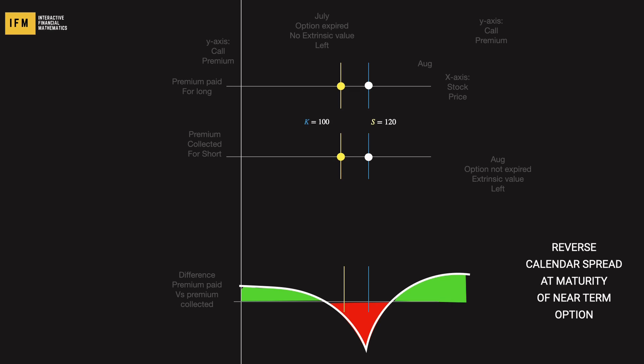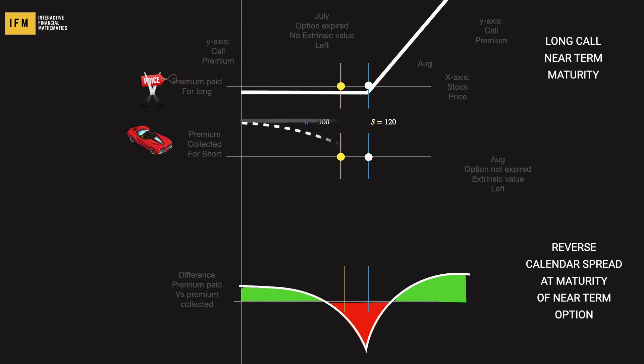This strategy involves buying a relatively cheap short-term option and selling a more expensive longer-term option. It's particularly useful when you anticipate not only a significant price movement in the underlying asset over the short term, but also an increase in volatility.